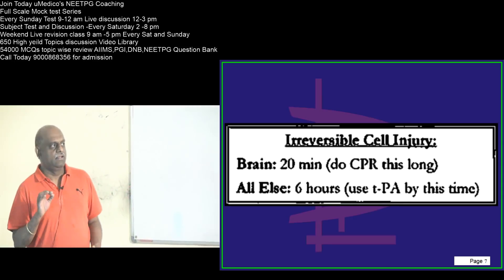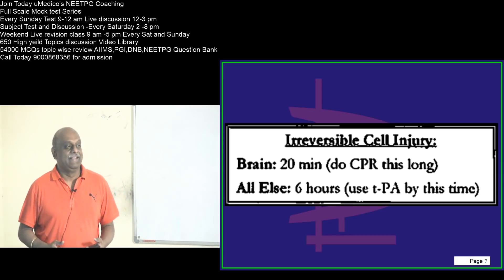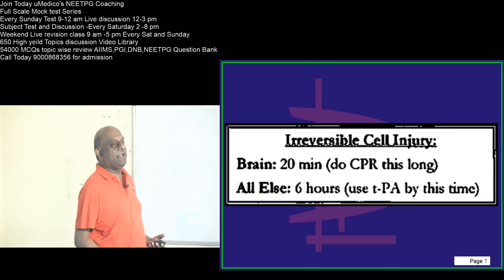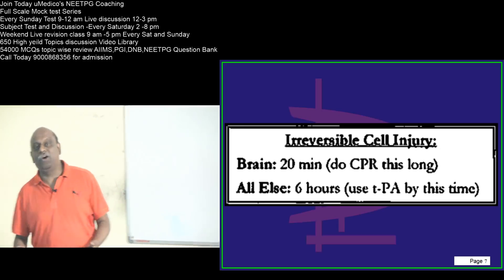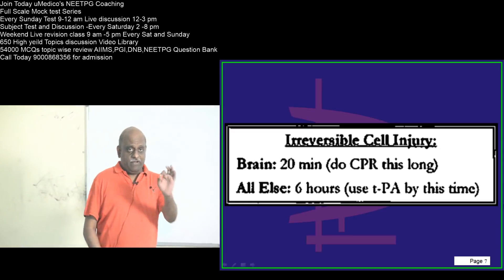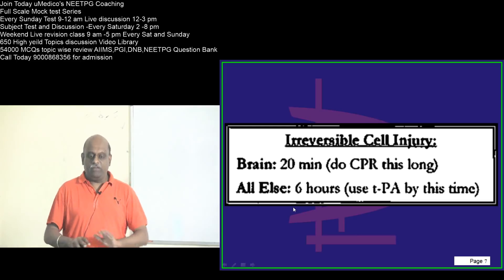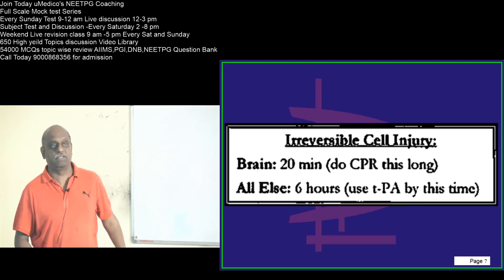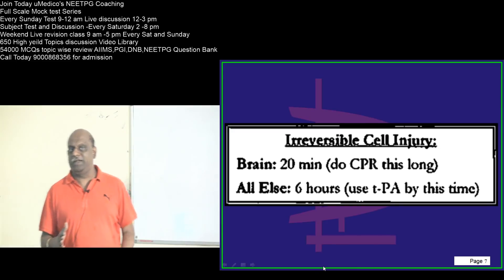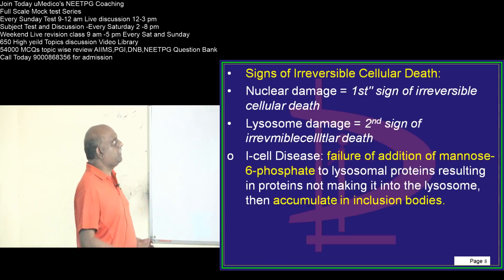Now the nasty numerical question in the NeatPG. Irreversible cell damage — when will it happen in the brain? It takes 20 minutes in the brain. That's why whenever you are doing CPR, you should continue for at least 20 minutes. In all other organs it is 6 hours. That is why whenever you are doing thrombolysis for myocardial infarction with tissue plasminogen activator, the golden period is 6 hours.